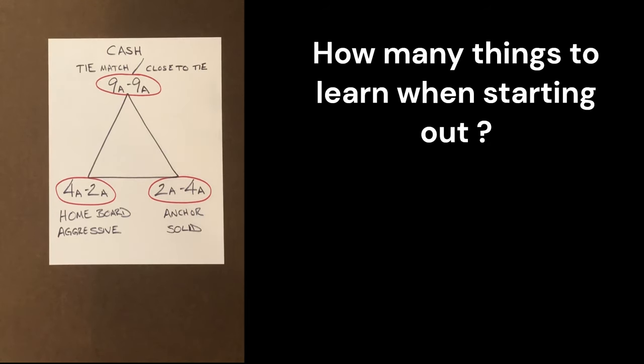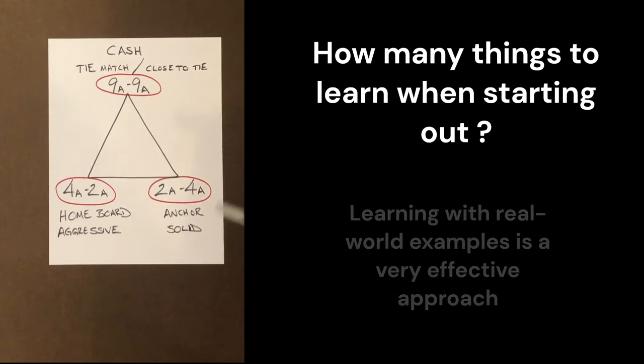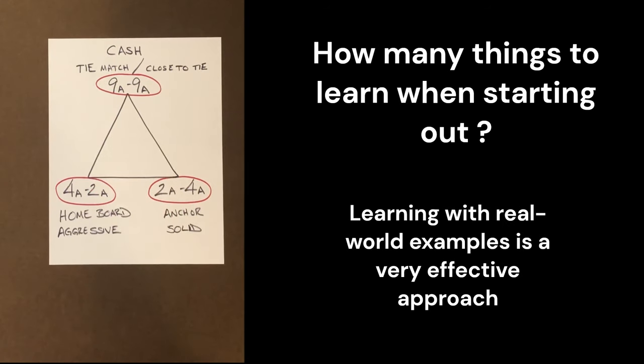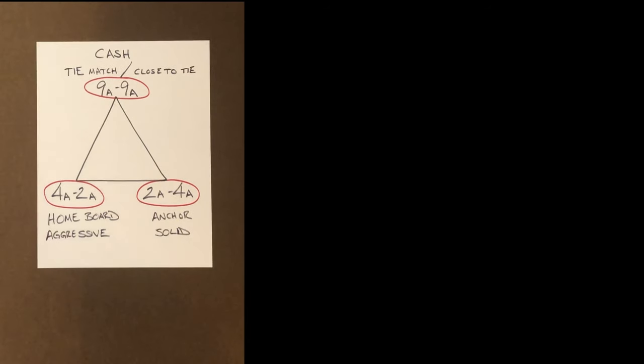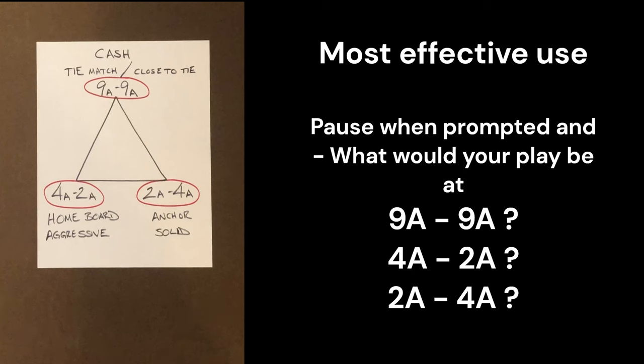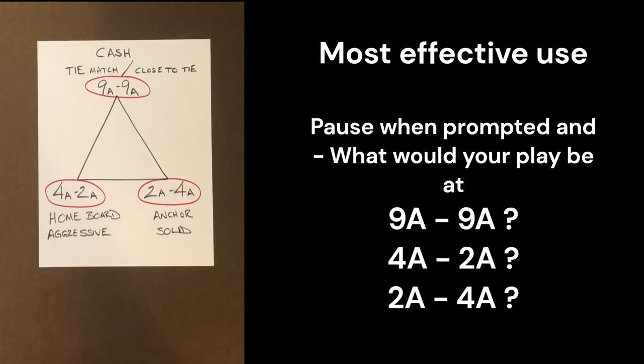We can learn along the way different subtleties in opening play, but at the same time, we're learning our cash game play, and we're learning how to make adjustments in our play at any match score. Now the best way to learn from this series of videos is when prompted, pause the video. And what you're going to do then is write down, or just say out loud, what your play would be if you were 9 away 9 away. But what if you were 4 away 2 away? Now what would your play be? And at 2 away 4 away, what would your play be? Resume the video and see how close you are.